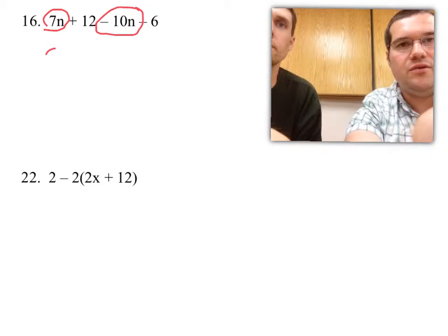signs are different. We're going to subtract, so we're going to get a 3. There's more negatives, so it's a negative 3n.